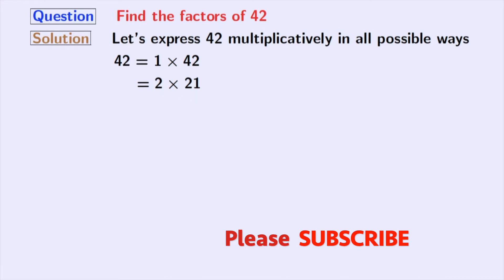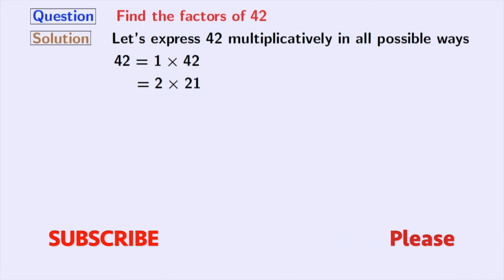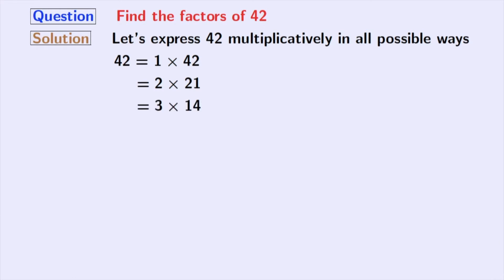The next number is 3 and this gives us 3 times 14, which is equal to 42. The next number is 4 but it does not divide 42. And next comes 5, which also does not divide 42.